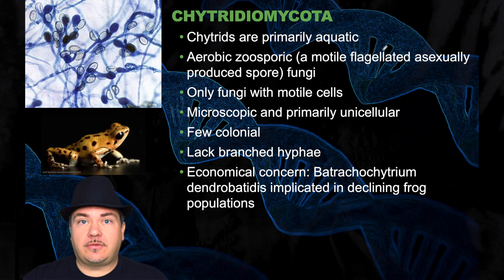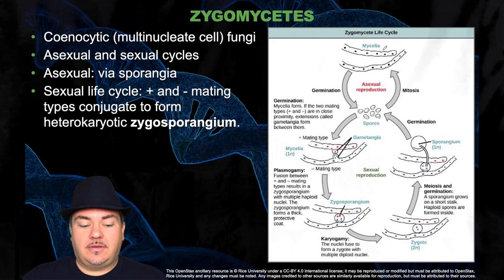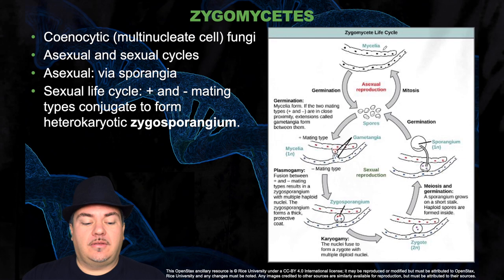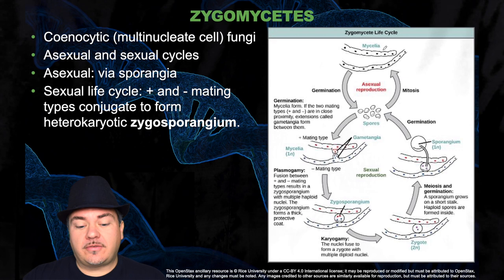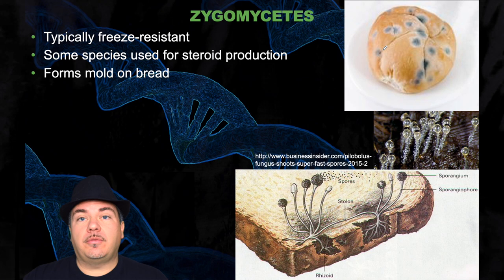The next phylum is the zygomycetes. These are coenocytic, which means the cells have more than one nucleus inside them. They have both sexual and asexual life stages. The asexual life stage is through the sporangia, whereas the sexual life stage has positive and negative mating types that conjugate to form the heterokaryotic zygosporangium. They're typically freeze resistant. Some of these species are used to produce steroids and others form mold on bread.